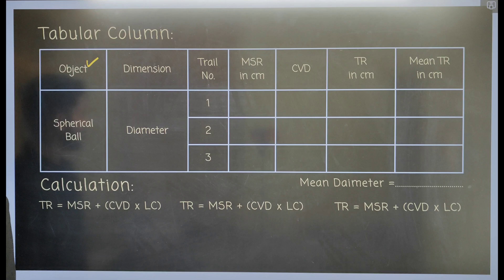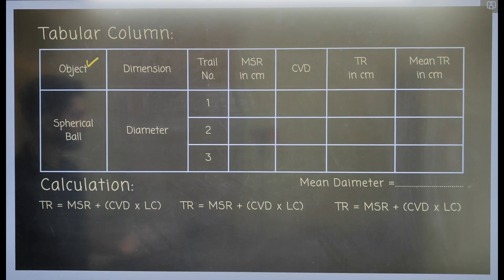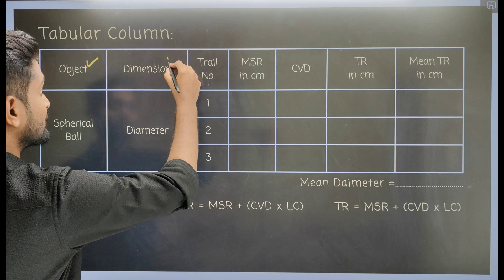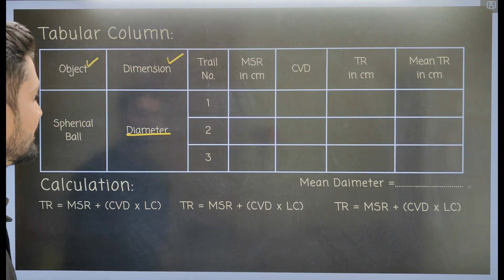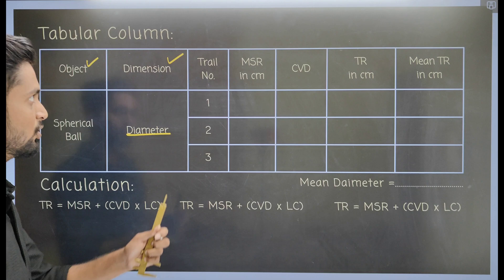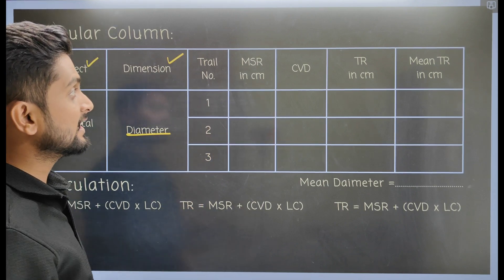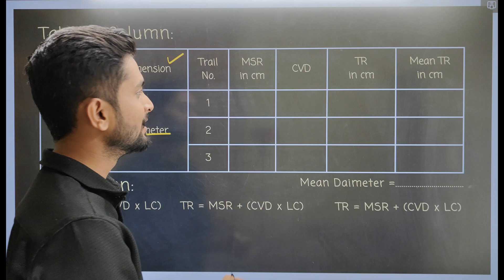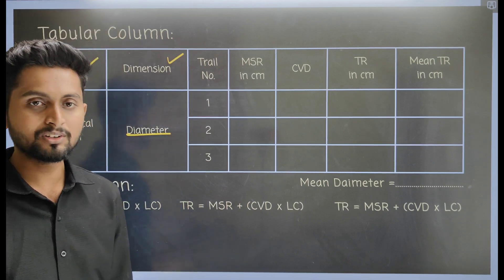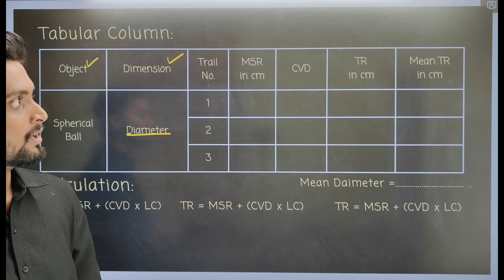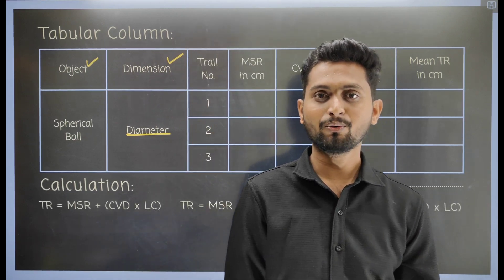Now for the tabular column. The first column is the object — in this experiment the object is a spherical body. The next column is the dimension being measured, which is diameter. Then we have the trial number column — we perform the experiment three times: trial 1, trial 2, and trial 3. The other columns record MSR (main scale reading in centimeters), CVD (coincident vernier division), TR (total reading), and mean TR.